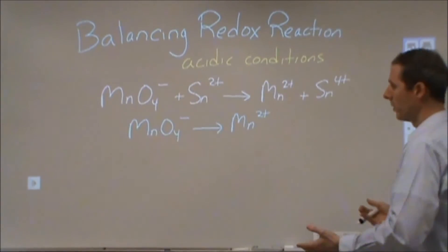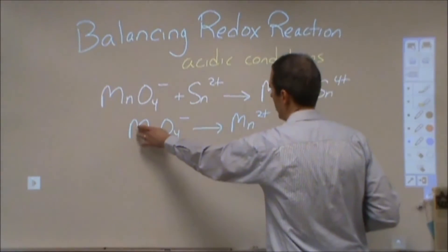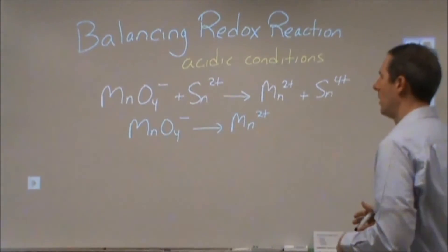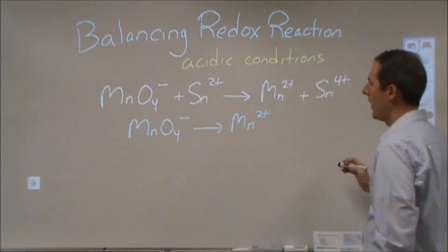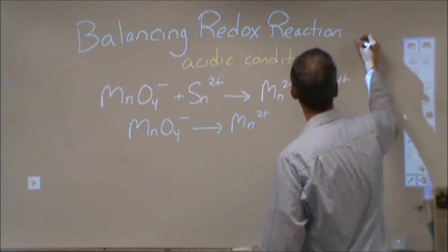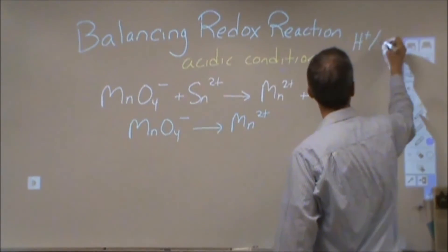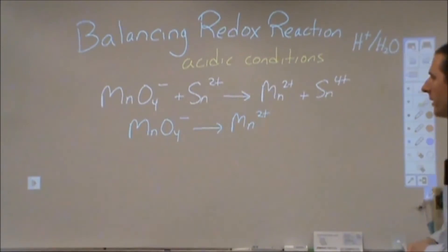So this is a reduction. We're losing oxidation or we've seen the oxidation state of this reduced. And so we need to balance just this reduction half-reaction. So to do that, when you're doing acidic conditions, you have H+ and waters available to help you balance.